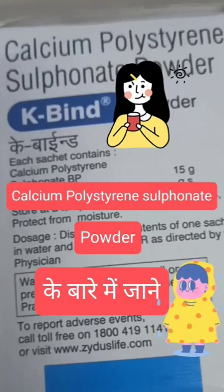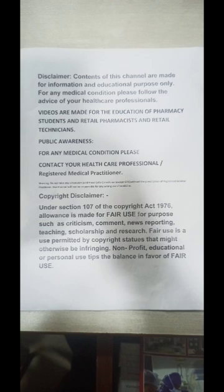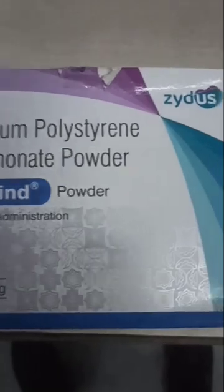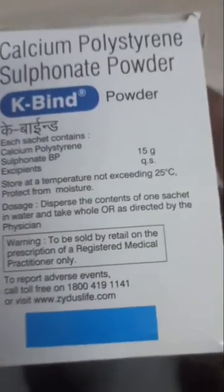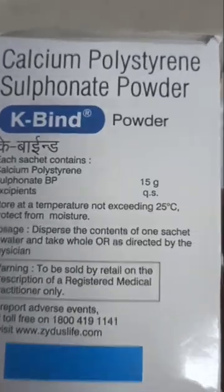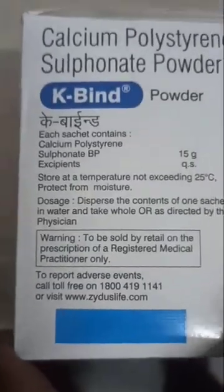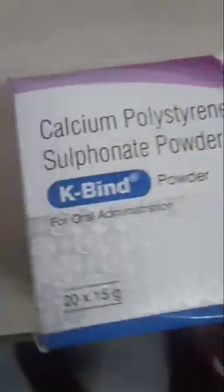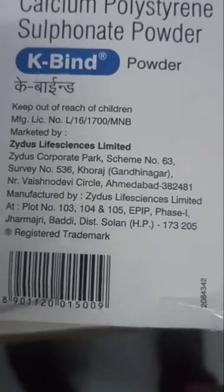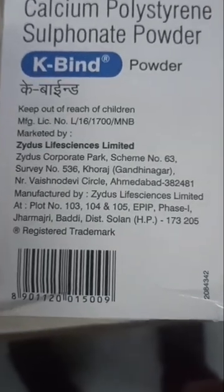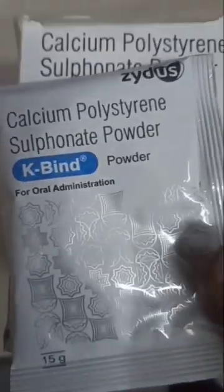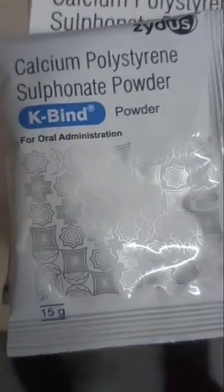Calcium polystyrene sulfonate powder is a cation exchange resin used primarily to treat hyperkalemia, a condition characterized by elevated potassium levels in the blood. It is especially important for patients with chronic kidney disease, those on dialysis, or those taking medications that increase potassium retention. All the details are in the description.